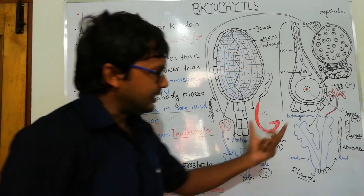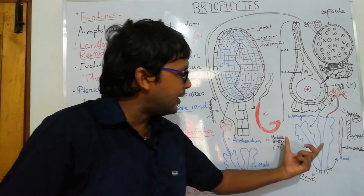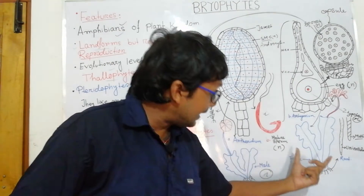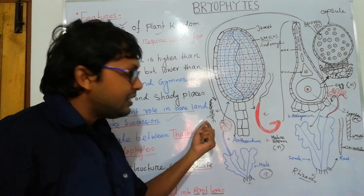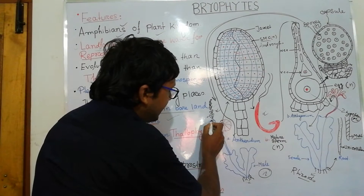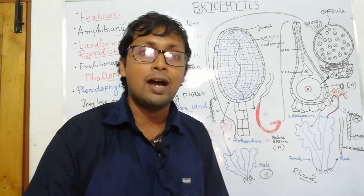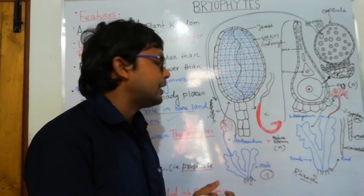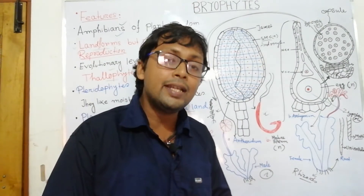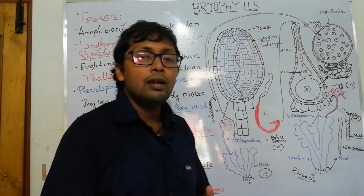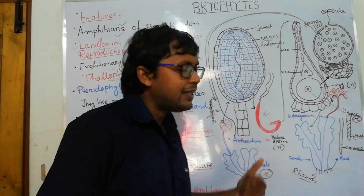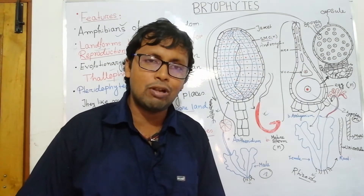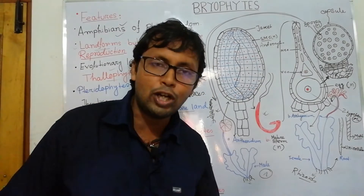The vegetative body of bryophytes can have a thallus-like structure — primitive liverworts have a thallus-like structure. They are leafy but rootless. What looks like roots are actually rhizoids — they function like roots, absorbing minerals, but are not true roots because there is no vascular tissue: no xylem, no phloem, no developed conducting tissue. Rhizoids can be unicellular or multicellular.